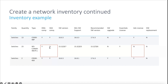For the 2960 in the customer inventory, the essentials license does not support software-defined access — you need the advantage license for SDA. However, the software versions do meet the DNA center criteria. Based on this analysis you decide whether a switch needs to be upgraded, whether the license level meets requirements, and then plan the migration accordingly.